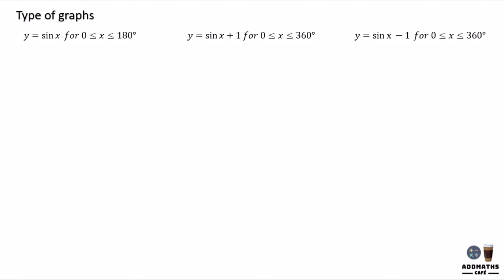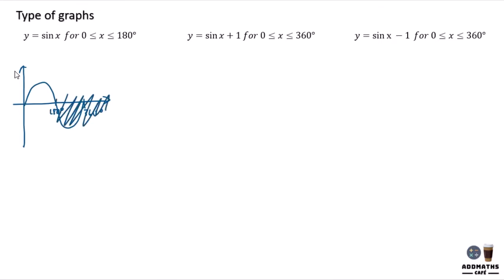If you are required to sketch sin x for 0 to 180 degrees, that means your sin x was originally going all the way to 360 degrees — this is 360 and half of it is 180. So what you are required to draw is just the front part, from 0 to 180. Your maximum height will still be 1. Label y and x.